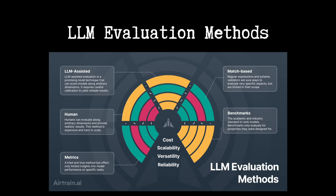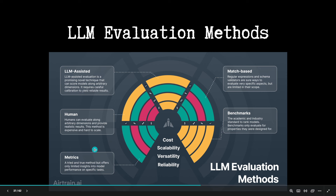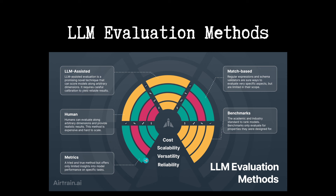What are the methods for evaluating a pre-trained LLM? There are five main methods: human evaluation, LLM-assisted evaluation, match-based evaluation, benchmarks, and common metrics. If it is green it is easy, yellow is moderate, and red is more difficult. When it comes to cost, the most efficient method is to use metrics — it is the best option in almost every dimension except versatility.